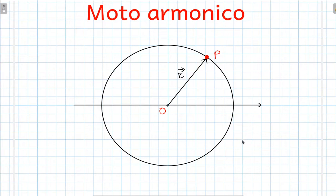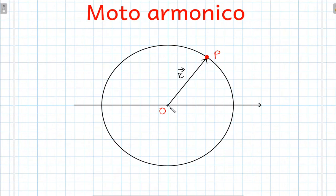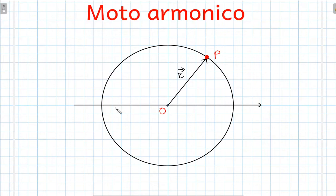Voi conoscete già il moto circolare uniforme. Per parlare di moto armonico partiamo proprio dal moto circolare uniforme che abbiamo già imparato a conoscere. Supponete di avere un punto P che si muove su una traiettoria circolare con un periodo costante, quindi di moto circolare uniforme. Ora considerate il raggio vettore, cioè il vettore che partendo dal centro della circonferenza indica la posizione del punto P. Questo raggio vettore si muove un po' come la lancetta di un orologio, anche se lo stiamo facendo muovere in senso orario — il moto circolare può avvenire in tutte e due i versi.